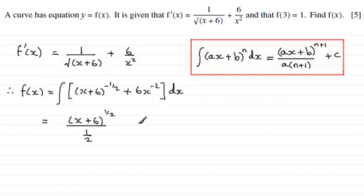And when it comes to integrating plus 6x to the minus 2 we add 1 to the power so that's 6x to the power minus 1 and we divide by the new power minus 1. And then we mustn't forget the constant of integration plus c.